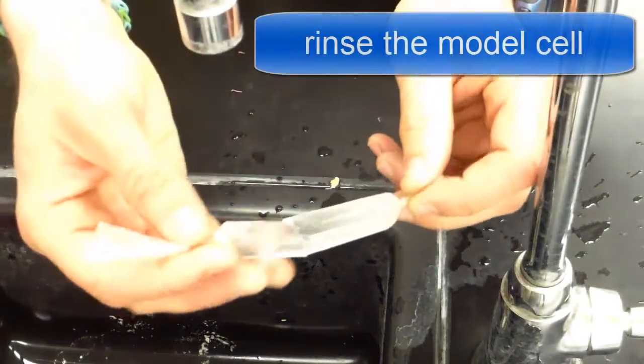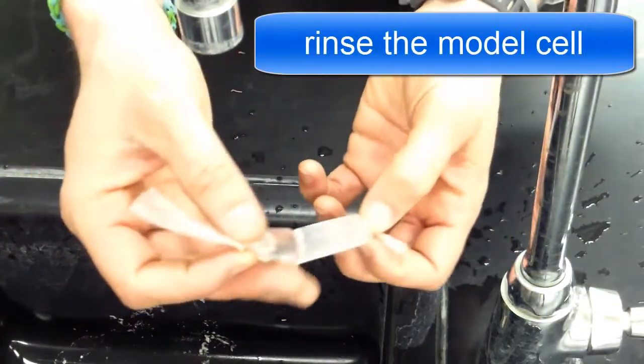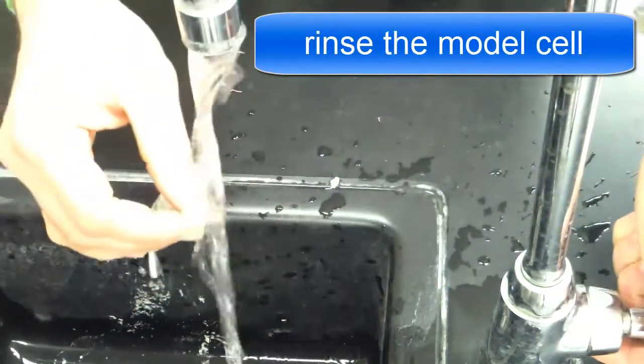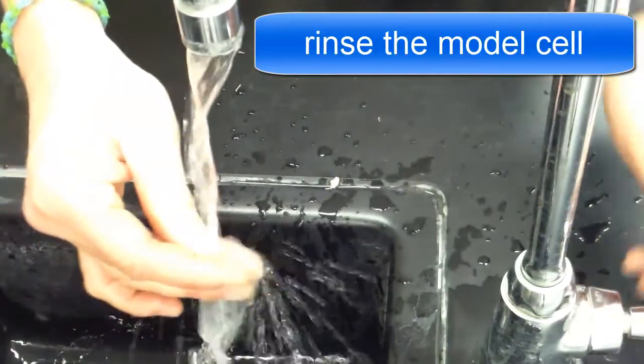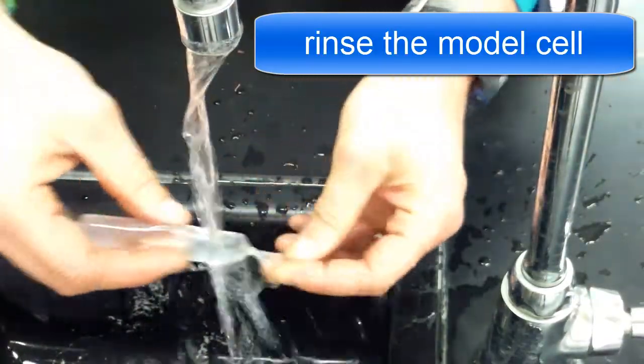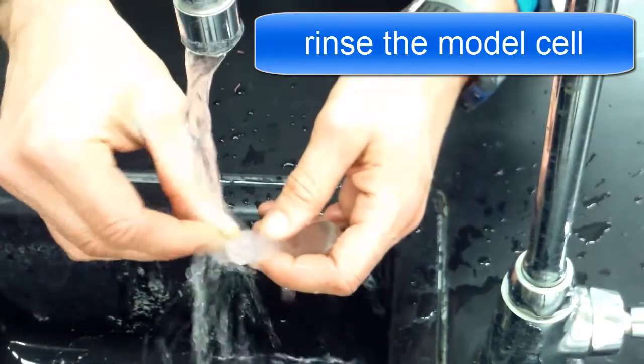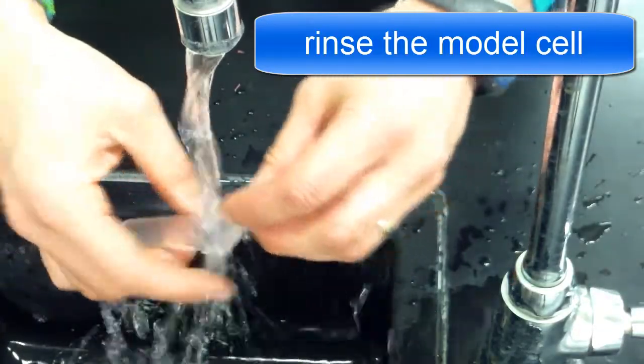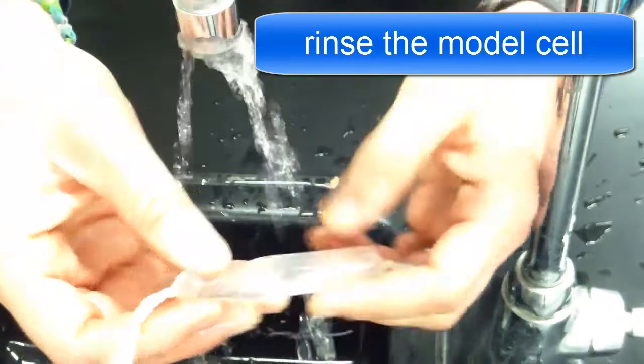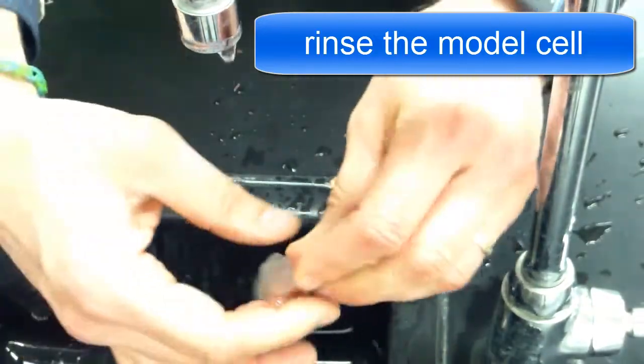All right here we are back at the sink and we have our cell tied at both ends. I'm going to make sure that I turn the water on and rub my fingers back and forth and really rinse out, rinse the cell and rinse the ends to make sure that there's no excess glucose or starch solution on the outside of the cell.